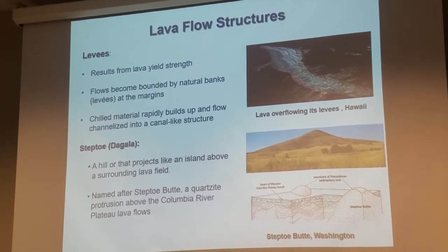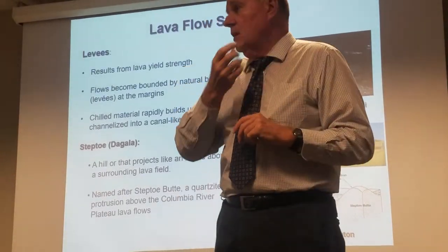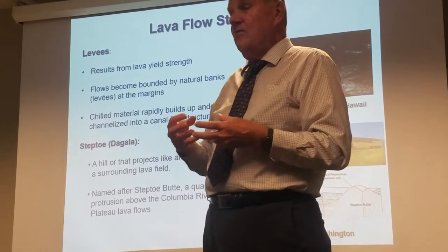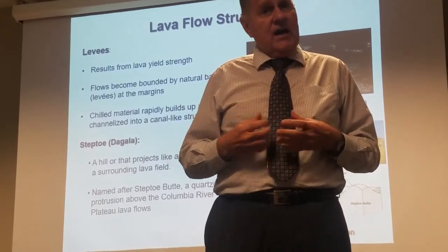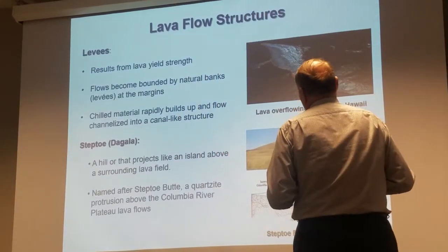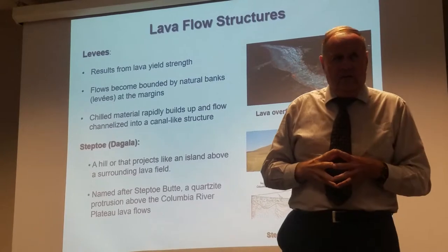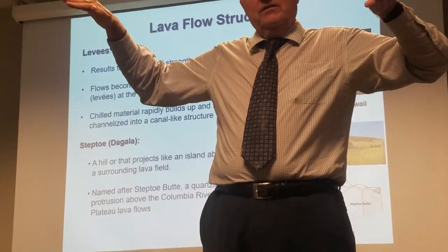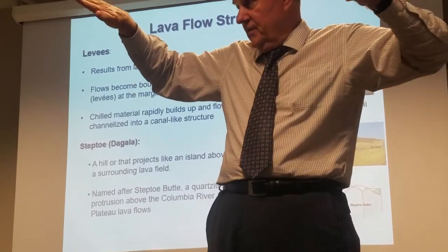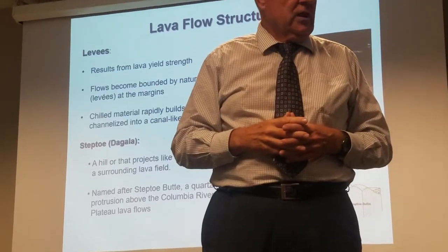Now, lava flow structures. One of the things to remember is that lava is not like water, which has essentially no strength — lavas have lots of strength. Even low-viscosity basaltic lavas have a certain amount of shear strength, and when they flow they will actually create levees. The levees are created on the outside as the magma cools and develops shear strength, resisting flow more on the outside, creating natural levees just like in a river channel. The remaining lava then flows in the center.